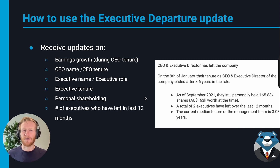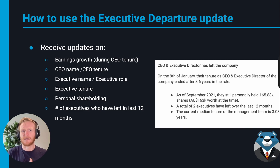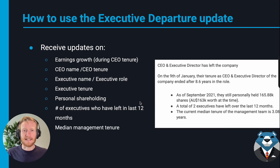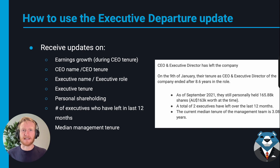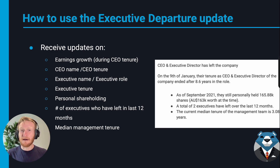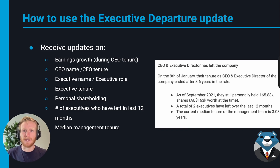We'll also display the number of executives who have left in the last 12 months, to provide context about whether this is a systemic issue with a large number of executives leaving, or a personal one-off situation. We'll also cover the median management tenure — how long managers typically stay. Anything less than two years is pretty quick and not ideal; above two years is preferable and shows lower turnover.